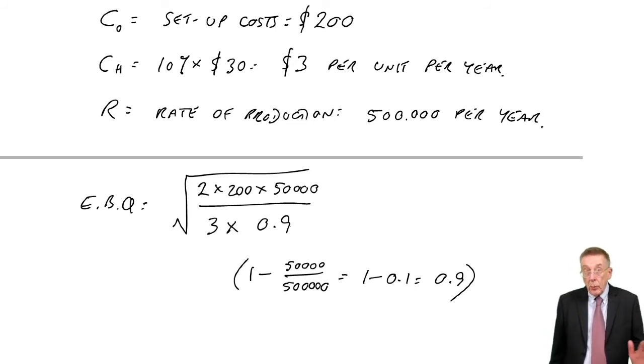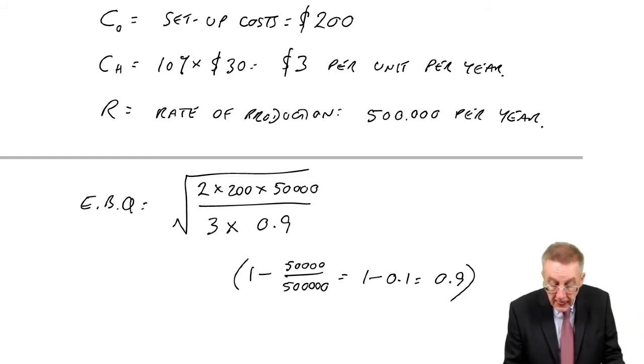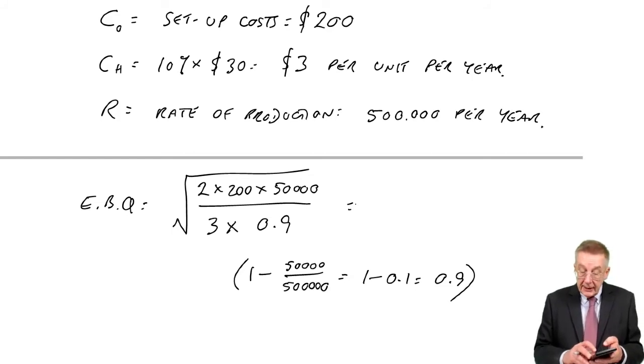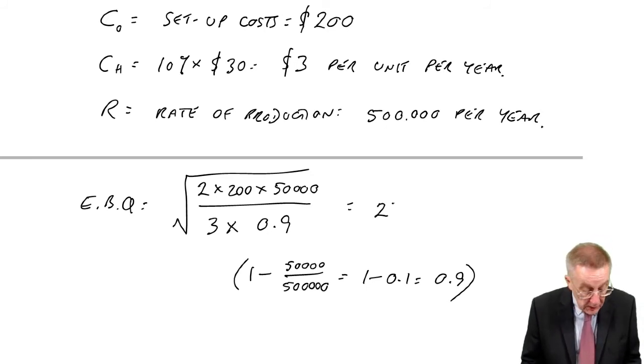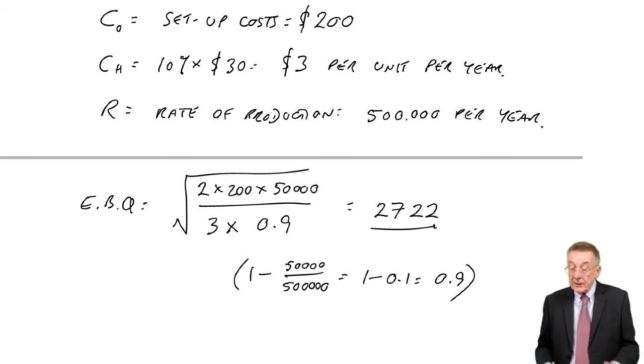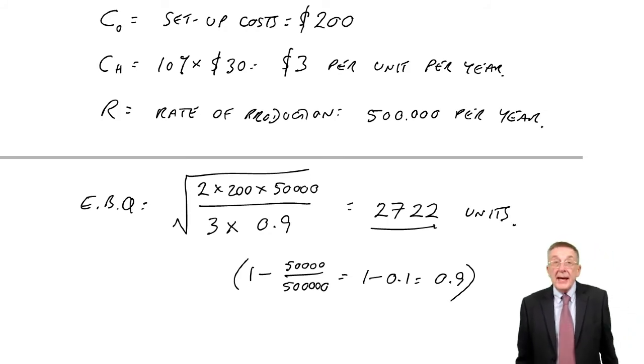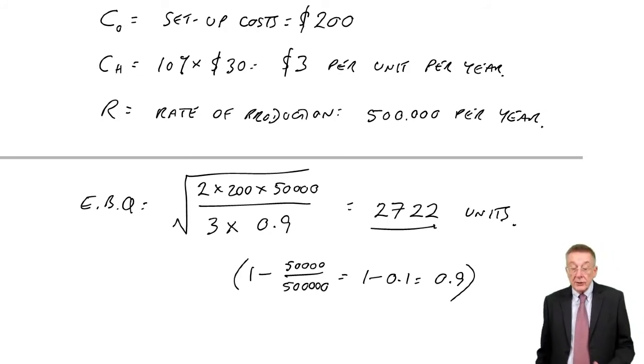So, 1 minus D over R, 0.9. And so, let's do it. 2 times 200, times 50,000, divided by 3, divided by 0.9, square root, I get 2722. It doesn't come exactly, so round it to the nearest unit. But there's how many we'll order from the factory each time.